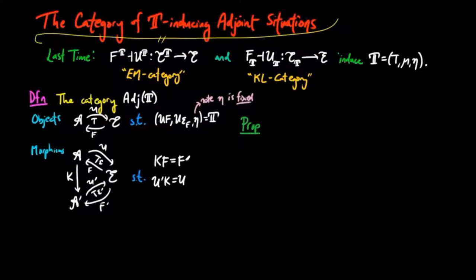In the subsequent, we'll need the following result. Given a morphism K in the category of T-inducing adjoint situations, we have the A prime morphism K epsilon a equals epsilon prime Ka for each A object, little a. Let's prove this.